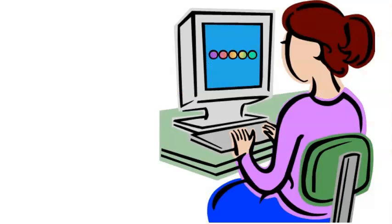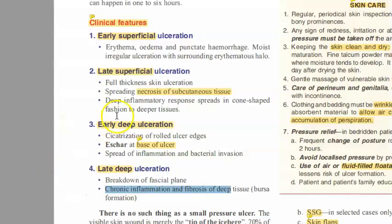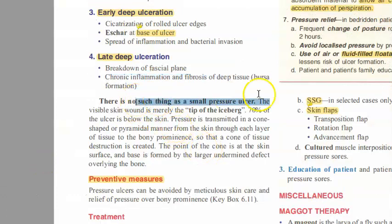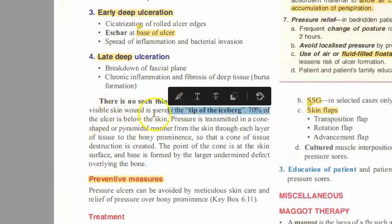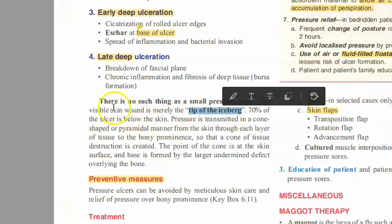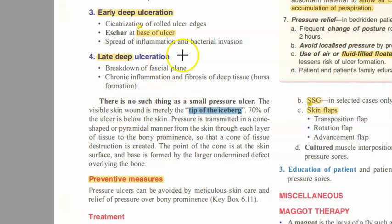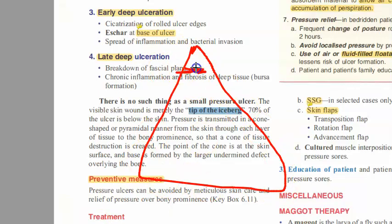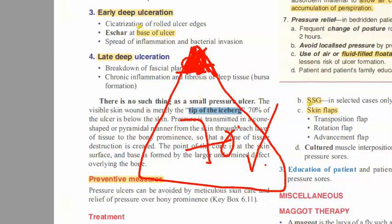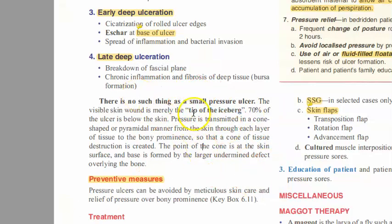There is no such thing as a small pressure ulcer — the visible skin is merely the tip of the iceberg. Around 70% of the ulcer is below the skin. So remember the 'tip of iceberg' phenomenon in pressure ulcers: what you see on the surface is very small, but inside it can be very extensive.